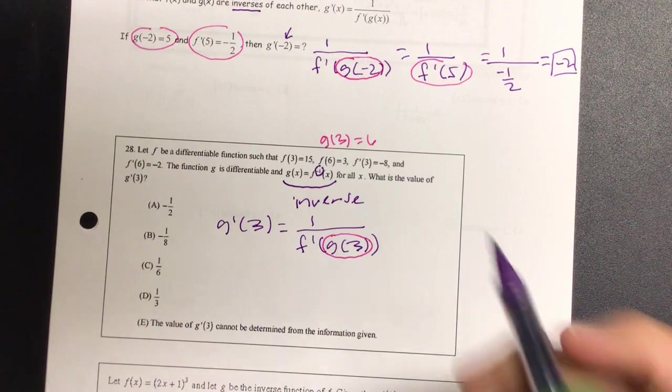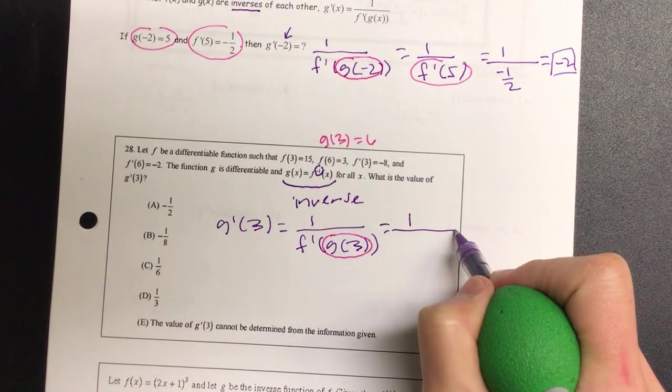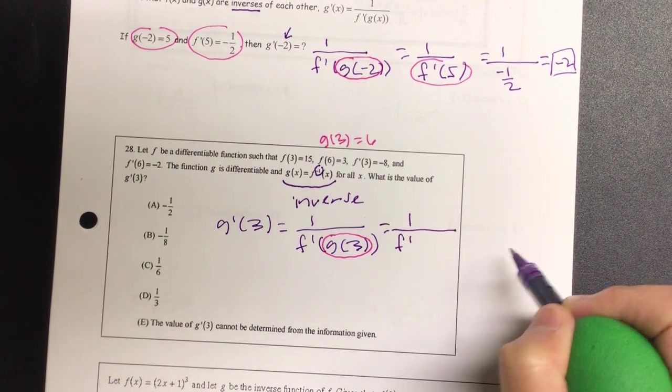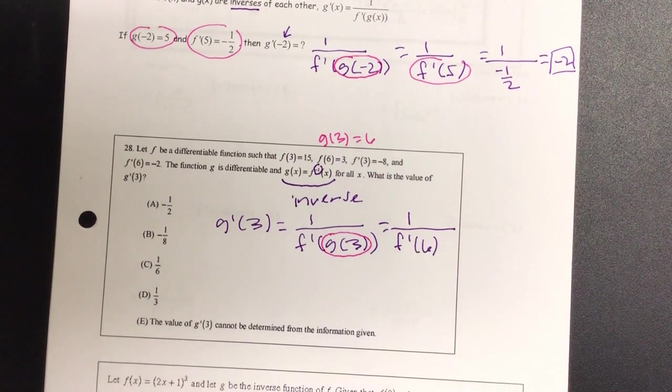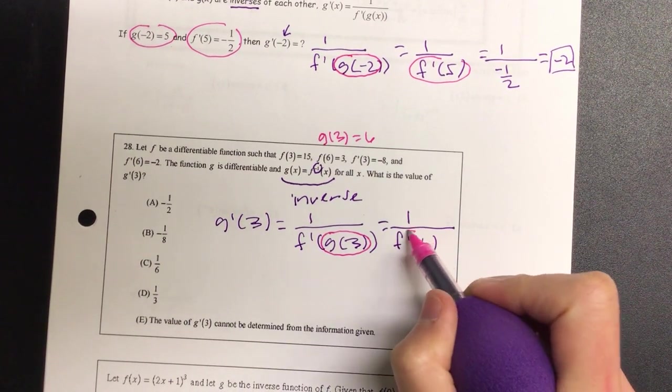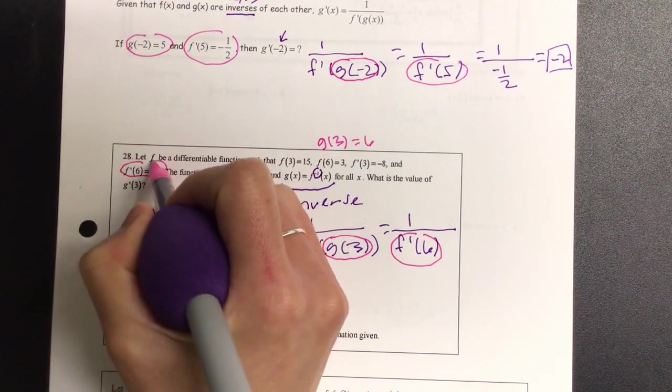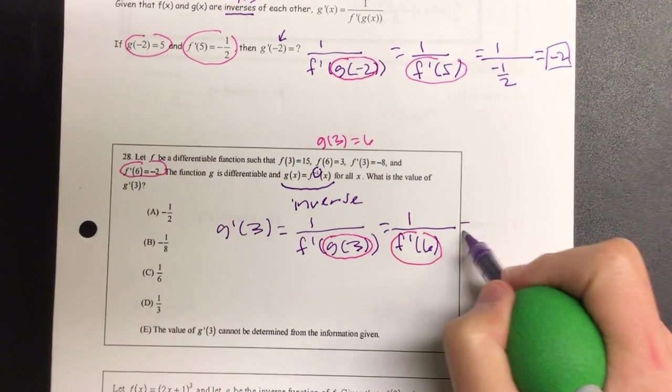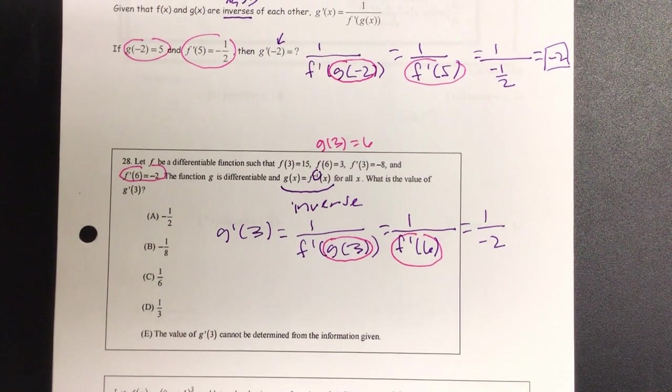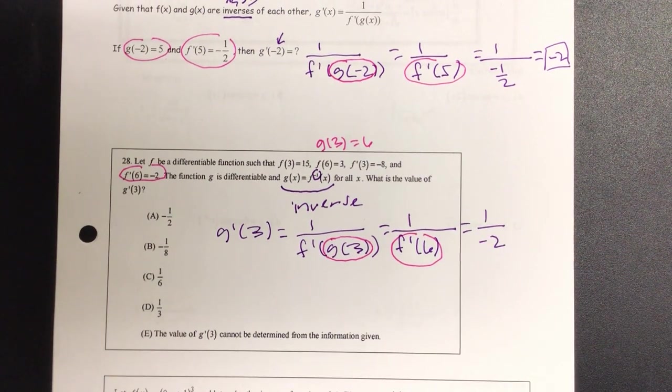g(3) must be 6. So in that case, I have 1 all over f'(6). And then if I go on the inside one more time, do I have f'(6)? Right there. So we have 1 all over negative 2, which gives us which letter? Boom.